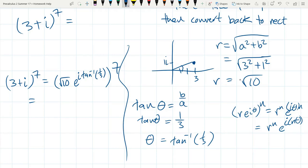So I'm going to apply that 7th power now. So we have square root 10 to the 7th power. E to the i, 7, tangent inverse 1 third. I recommend you turn this into a number, either in radians or degrees. It doesn't matter. Square root 10 to the 7th. You can write it as 10 to the 1 half. That's square root to the 7th.